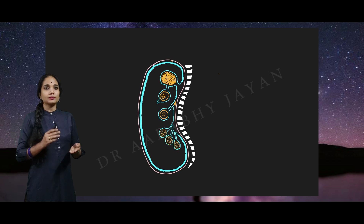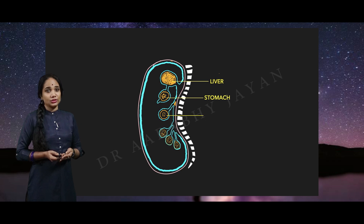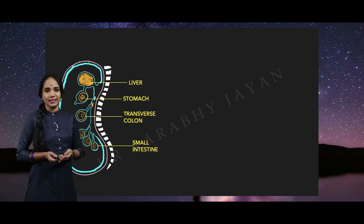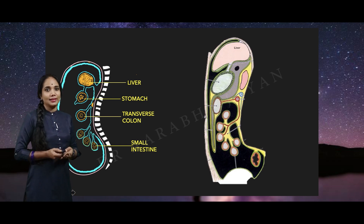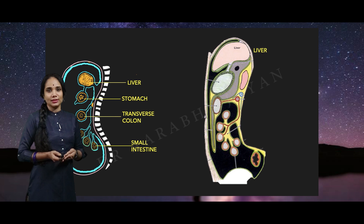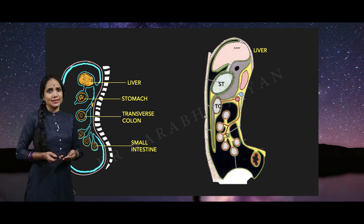This diagram now looks like one of those diagrams you see in your textbooks, so let's label them and compare. That is the liver, there you have the stomach, this is the transverse colon, and there you have the small intestine. Doesn't this look like one of our diagrams from the text? Let's have one of those diagrams — here it is. So let's label the contiguous structures: there we have the liver, that is the stomach, the transverse colon, and the small intestine. Now the text diagram is beginning to make sense.